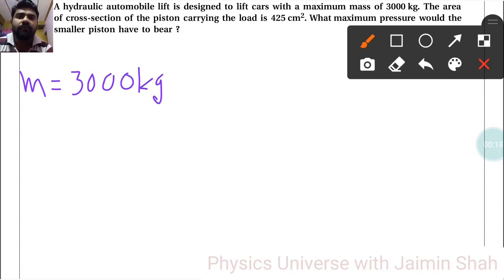The area of cross section of the piston carrying the load is A equals 425 centimeter square. Now we are converting centimeter square into meter square.